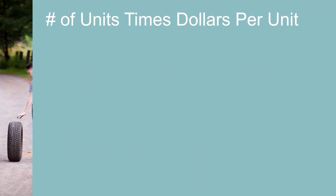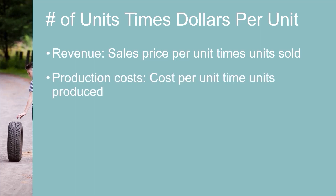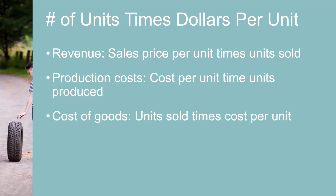All amounts on an income statement can be broken down into the number of units of something times the dollar amount per unit. For example, revenue is sales price per unit times units sold, production costs are costs per unit multiplied by the units produced, and cost of goods is units sold times the cost per unit.